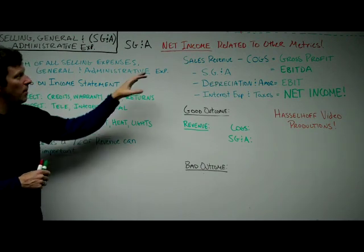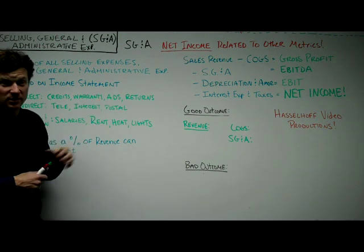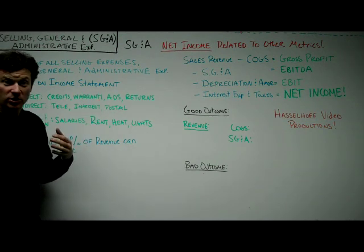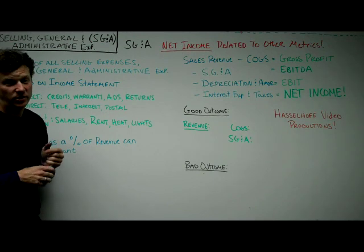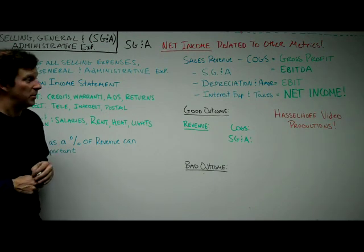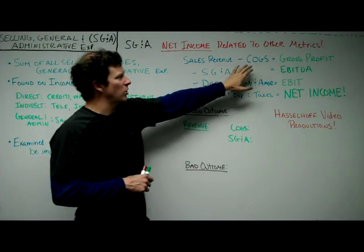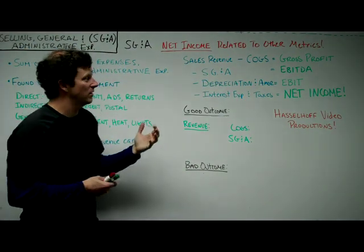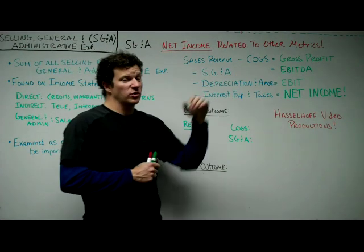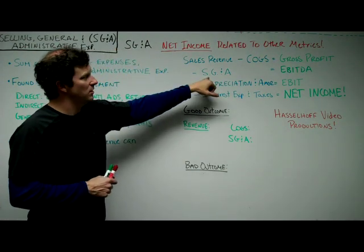As a reminder, net income refers to profitability — it's a marker of whether or not a company is profitable. If we start with revenue and subtract the cost of goods sold — the cost of creating the product — we get gross profit or gross margin. This is where SG&A comes in.